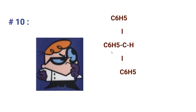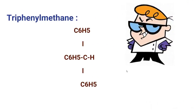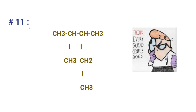Now the tenth compound. These are phenyl groups — C₆H₅. Name the compound. The name is triphenylmethane. Methane is a carbon with four hydrogens, but in this compound three hydrogens are replaced by phenyl groups, making it triphenylmethane.